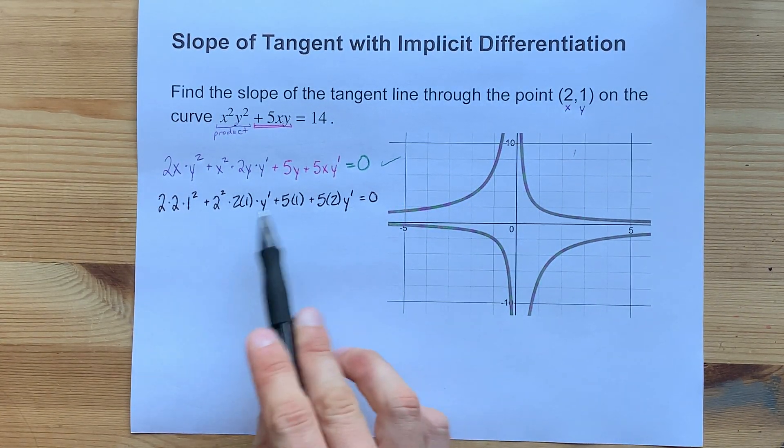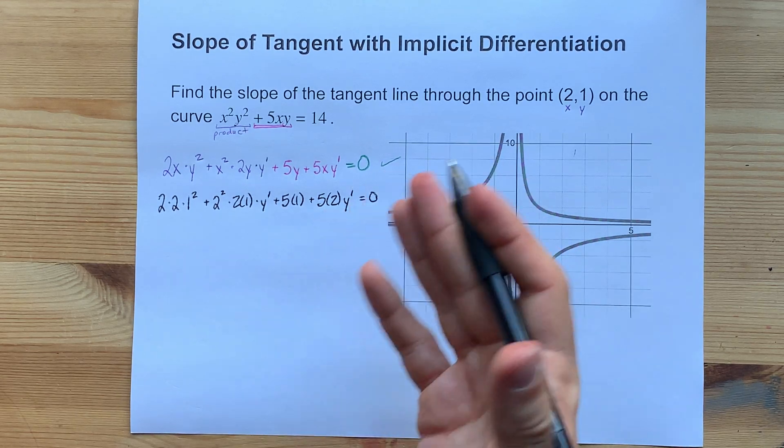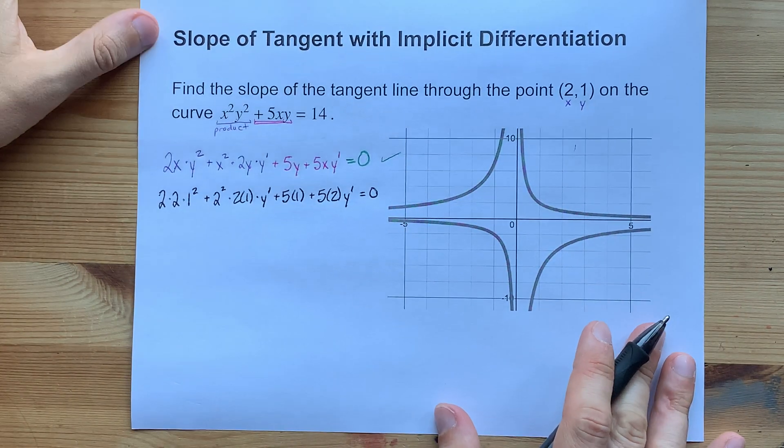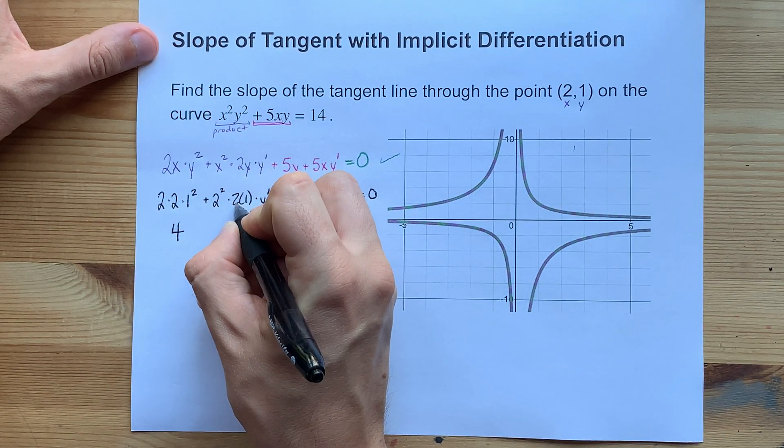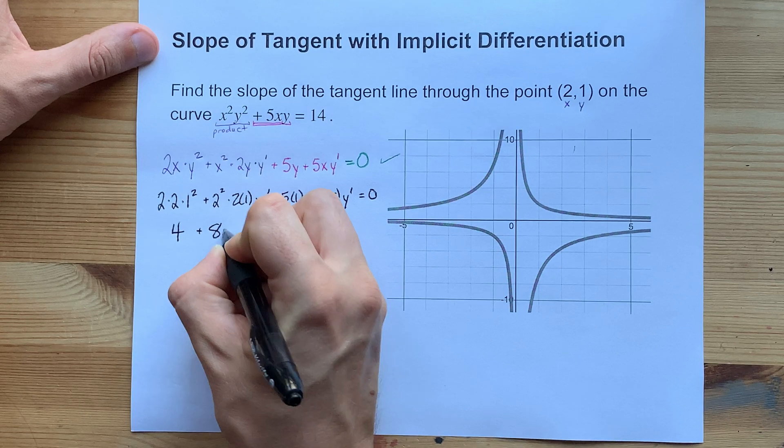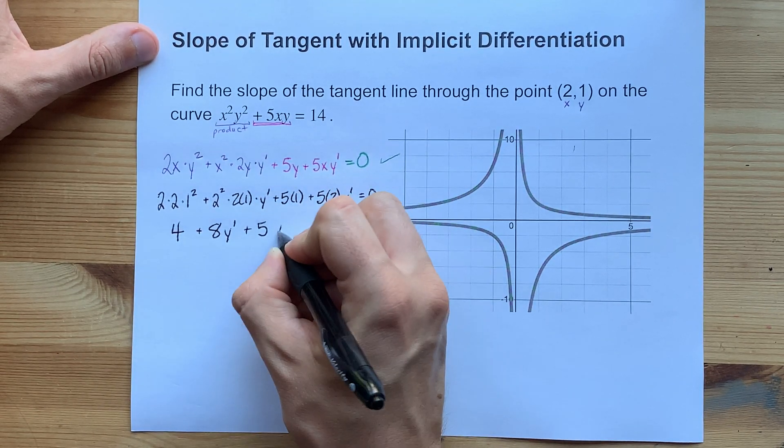The only variable left here is y prime, so you can solve this. Again, that's like grade 9 skills here in Ontario. 2 times 2 times 1² is 4. 2² times 2 is 8. 5 times 1 is 5. 5 times 2 is 10.